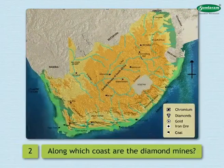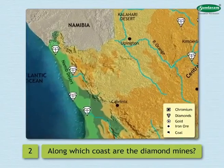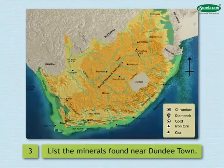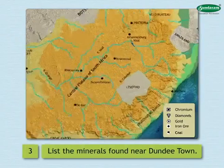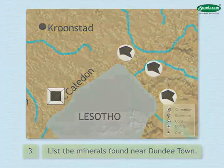2. Along which coast are the diamond mines? The diamond mines are found along the western coast of South Africa. 3. List the minerals found near Dundee Town. Coal and iron ore are found near Dundee Town.